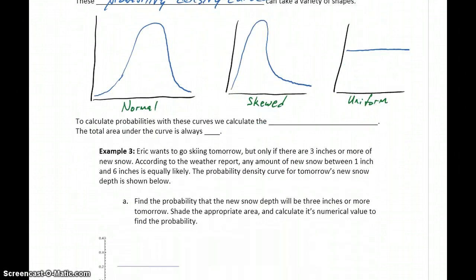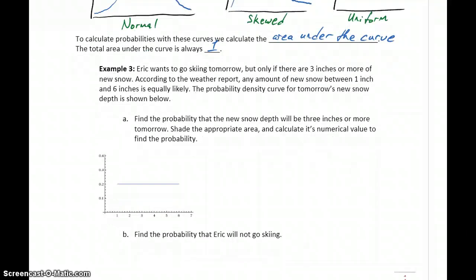To calculate probabilities with these types of curves, or with these graphs, what we'll be doing is calculating the area under the curve. And something to keep in mind is that the total area under the curve is always 1, because the area beneath the curve represents all possible probabilities. So if we took the probability of any outcome occurring, that would have to be 100%. That's our maximum probability.